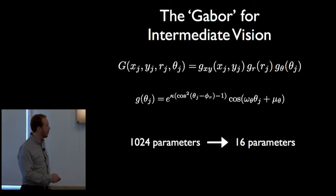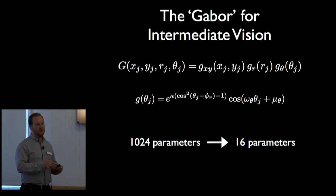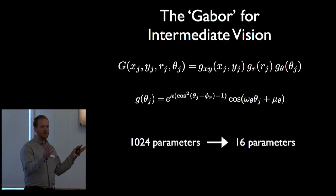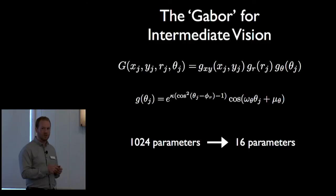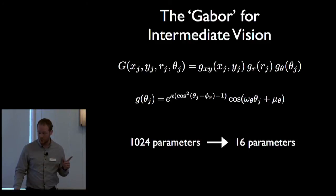We've effectively gone from this really complicated structure — I had to send my model off on GPUs learning for days to get it to converge, getting thousands of parameters — and at the end of the day I got this model that's going to be 16 parameters for each one of the second layer functions. Now I'll show you just how well we do with these parameters.